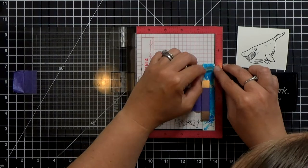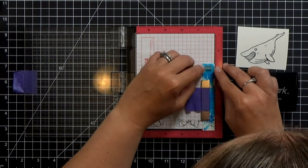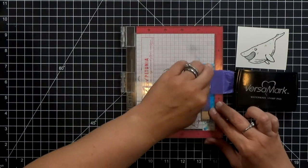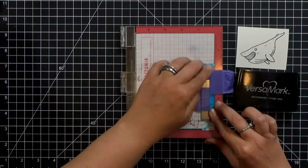Little stamps like this are a little tricky to line up but not too bad and I'm just going to repeat the process except this time I'm going to use VersaMark clear ink.